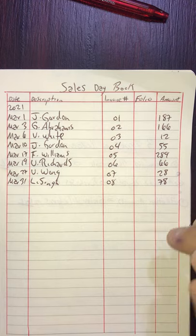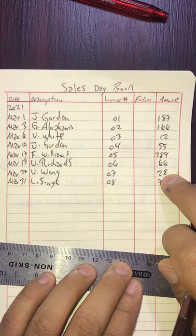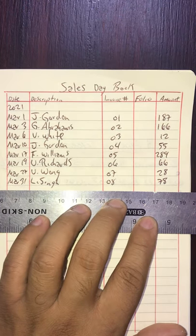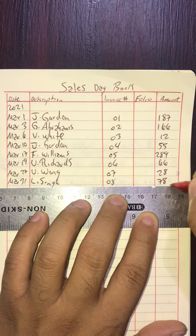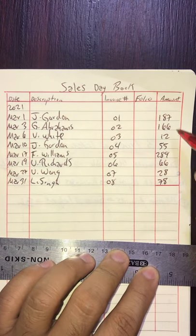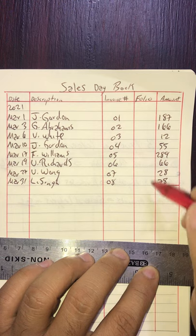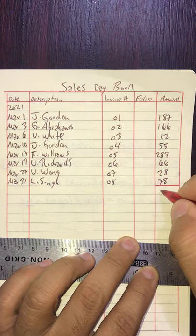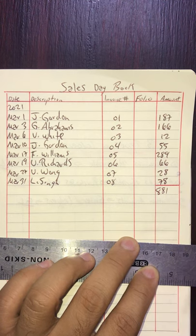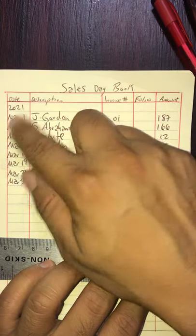If we want to know what our sales are for the month, we need to add the sale amounts reflected in this column. I will draw my single line there and add all these numbers or totals. If you add all of these, you would get a total of eight hundred and eighty-one.